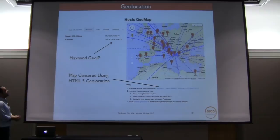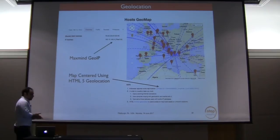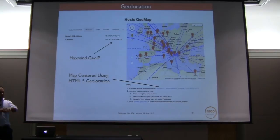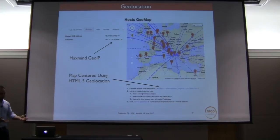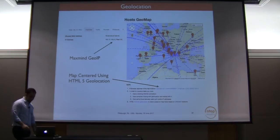Another interesting feature is geolocation. When you select a host and geolocation support is enabled, you can visit the geolocation page to see all active flows overlaid on a geographical map. You see the host at the center of the map and all its active connections going towards remote places in the world. Thanks to MaxMind data we overlay source and destination addresses on a world map to give you this kind of visibility.